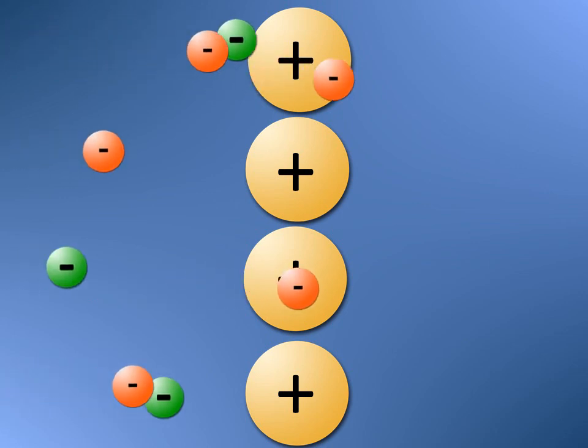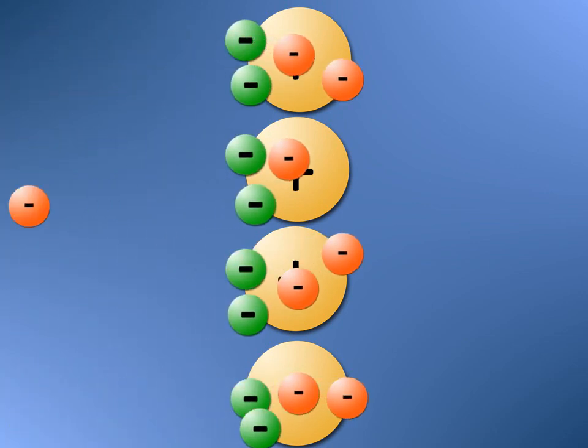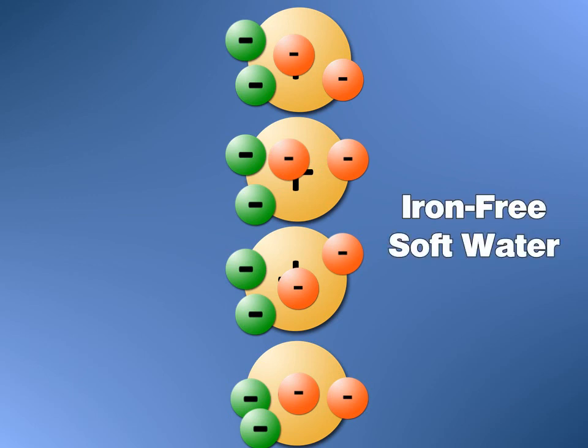A water softener that is kept free of trapped rust will remove an unlimited amount of iron from well water exactly like an iron filter, while avoiding the expensive cost and professional maintenance that an iron filter requires.